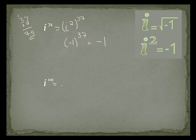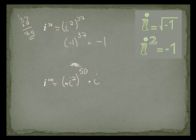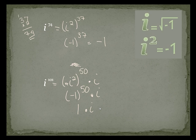Let's try this last one — it's a little tricky. i to the 101: i squared raised to the 50th power gives only 100, so I need one more. This is negative 1 to the 50th times i. 50 is an even number so negative 1 to the 50th is positive 1, times i, equals i. I hope you have a better understanding.